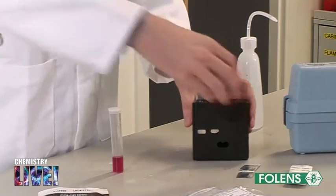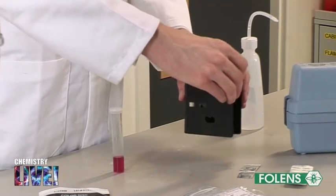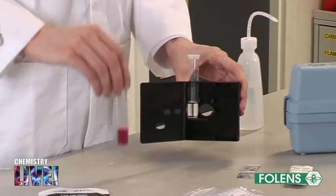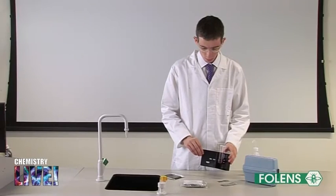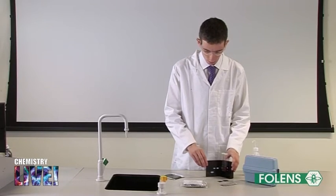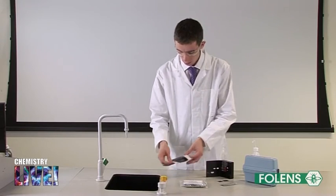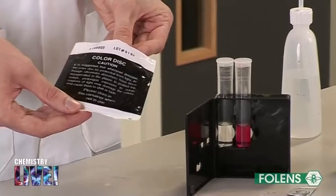Place the second sample tube in the right top opening of the comparator box. Remove the colour disc from its plastic protection cover and place it in the comparator box as shown.